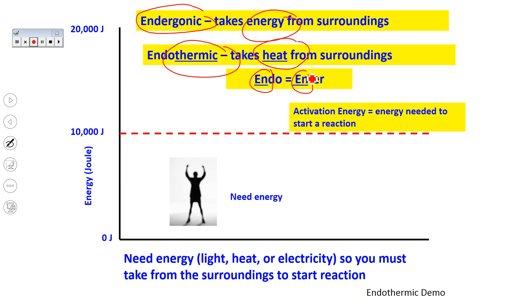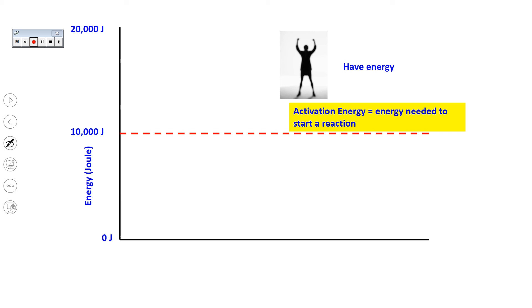One way to remember that endothermic means that heat is taken from the surroundings is that the first two letters of endothermic are the first two letters of the word 'enter.' For an endothermic reaction, heat has to enter from the surroundings — it has to be taken in from the surroundings in order to reach that activation energy. It is a need of heat or energy for it to occur.